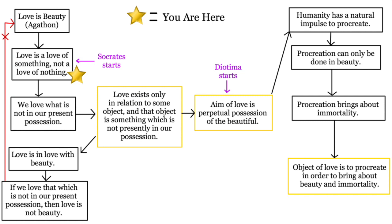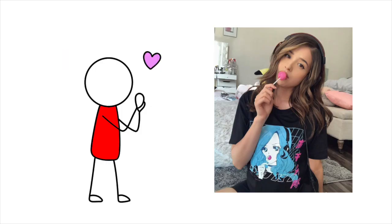So since love is a love of something, what is that thing? Do we love and desire things that are in our possession? Or things that are not in our possession? Agathon responds that we probably love and desire things that are not in our possession. In our world, we could see this in the idea of simps who love and desire people who they cannot have, like famous Twitch streamers.